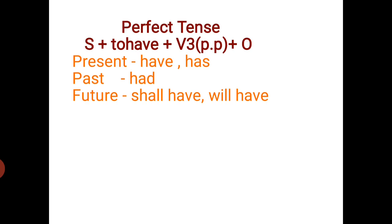In perfect tense, the sentence structure is: Subject, plus the 'to have' form, plus the verb in past participle form, and then the object. In perfect tense, we have to use the 'to have' form in present, past, and future tense. The 'to have' form only changes in perfect tense; the remaining sentence structure stays the same.